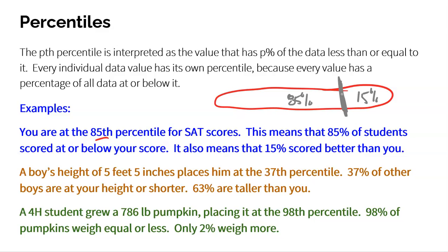Another example: a boy's height of five feet five inches places him at the 37th percentile. If we think about all boys in the entire United States, we know that 37% of boys are shorter or at that height, and 63% are taller than this particular boy. So the 85th percentile means you're towards the top, and the 37th means you're a little bit towards the bottom half.